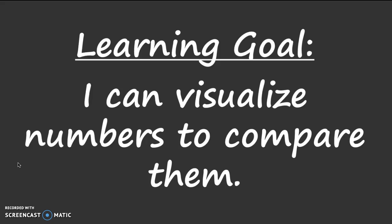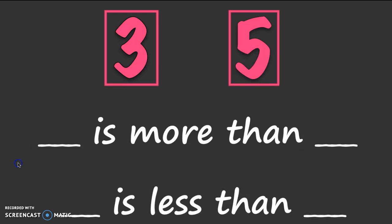So today we're not gonna write down anything. We are just using that good old brain, and we're gonna try to make pictures of the numbers in our brain, and then we're gonna compare that way. It's gonna be tricky — are you ready? I know that you are. Here we go. My first two numbers are three and five. Down at the bottom you see I already have my sentence: blank is more than blank, and blank is less than blank. That's because I know our goal is to compare.